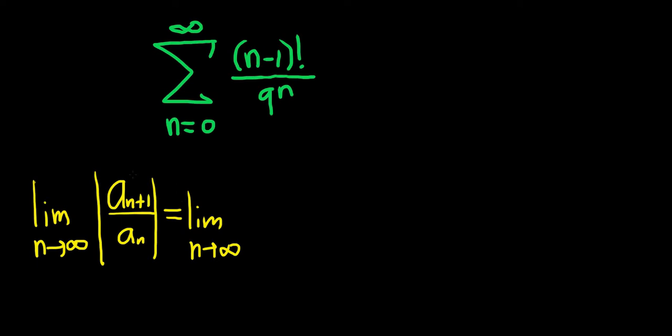Now notice that the top piece here is a_{n+1}. This basically means we replace all the n's with n+1. If we put n+1 inside the factorial, it becomes (n+1)-1 factorial. That's the same thing as n! because the 1's cancel. So this is n! over 9^{n+1}.